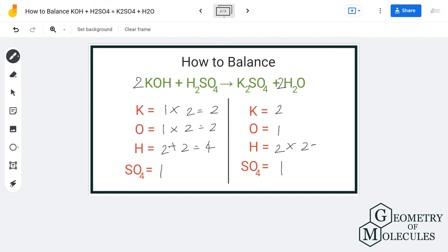So now if you look at this reaction, it is completely balanced because we have two atoms of potassium on both reactant and product side, two atoms of oxygen, four atoms of hydrogen, and one SO4 group on both sides.